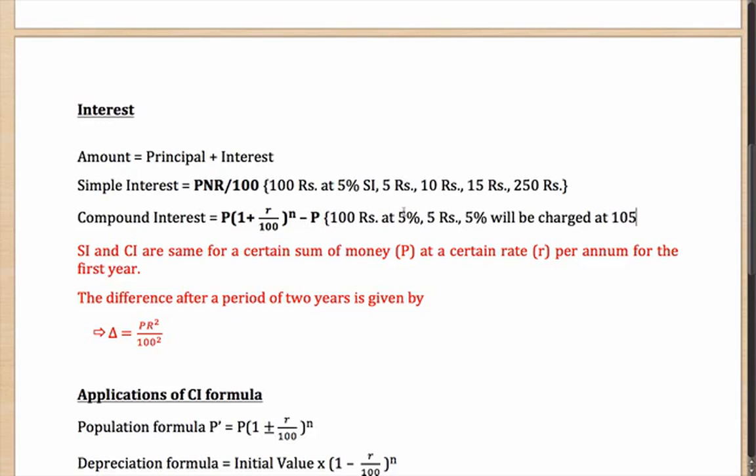But beyond that, the next 5% will be charged at the higher value which is at 105 rupees. The year after that again it will be charged at the new amount. So the base or the principal at which the rate of interest 5% in this case is charged, it keeps on changing every year. With this you can conclude that simple interest and compound interest are same for a certain sum of money P at a certain rate R per annum for the first year. As you could see in this case, in the first year simple interest was also 5 rupees whereas the compound interest was also 5 rupees. But that will not happen once you go beyond the first year.